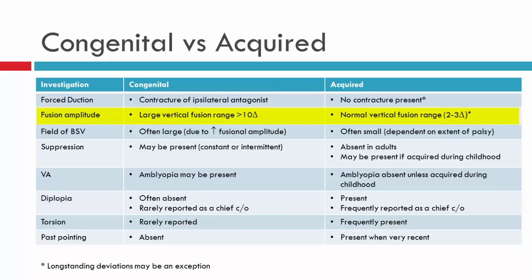In terms of fusion amplitude, often with congenital deviations and sometimes with very longstanding deviations, the fusion range — particularly the vertical fusion range — can be extended beyond normal. Where we usually expect the vertical fusion range to be around two to three prism diopters, you may find a patient has a vertical fusion range of 10 diopters or more. This is usually an indication of a congenital deviation. The abnormal head posture is often small because the field of BSV is often large due to these larger fusion amplitudes. In contrast with acquired deviations, we expect a smaller area of BSV.